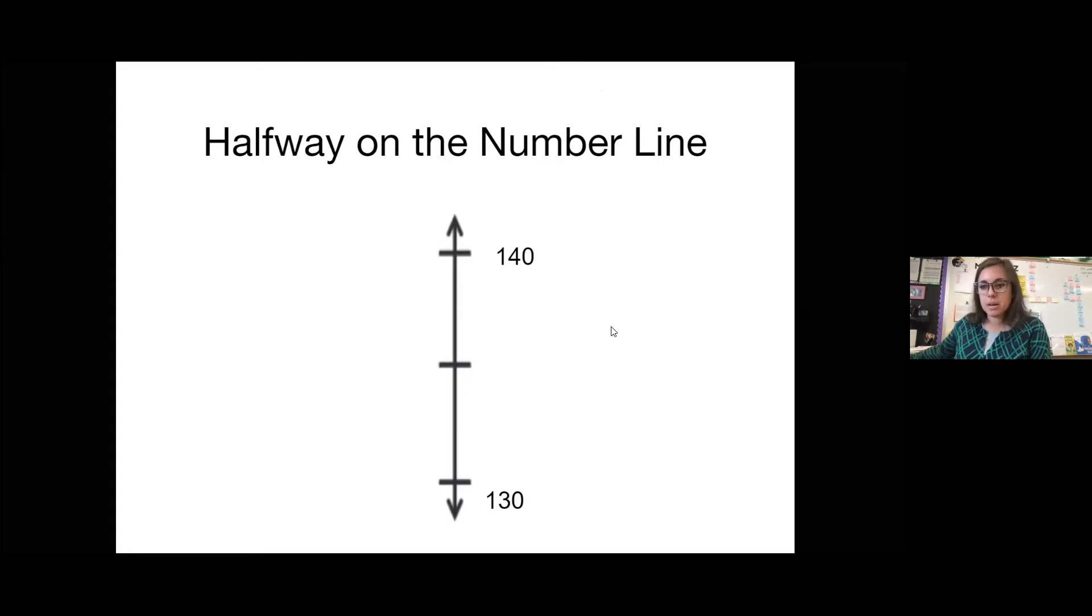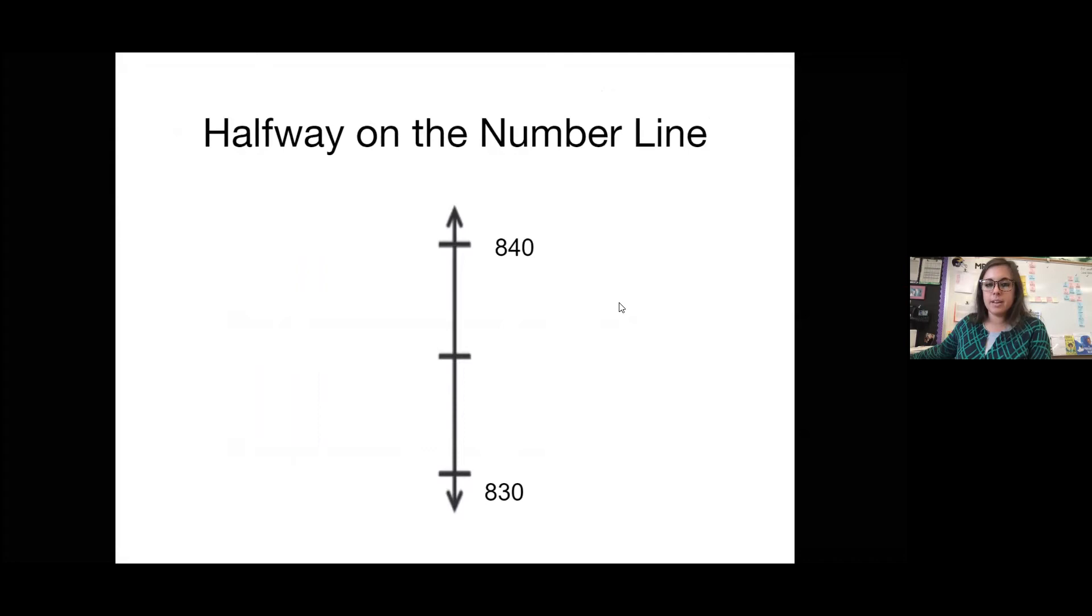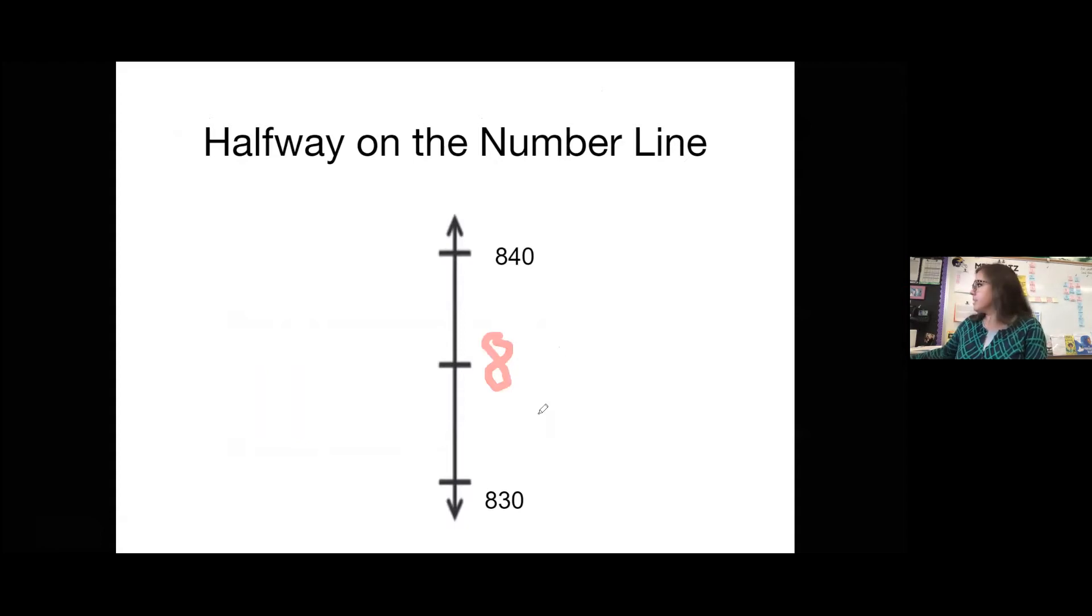All right, erase just the numbers. Keep the number line. And now let's do what's halfway between 830 and 840. Notice these numbers aren't changing. Pause the video if you need more time. So going from 830 to 840, we're staying in the 800s. And between 30 and 40 would be 35. So 835 is halfway between 830 and 840.